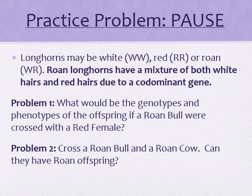Texas Longhorns — a really big cow with really long horns — can be white, represented by WW, red, represented by RR, or roan, which is white with some splotches of red. Roan longhorns have a mixture of both white and red hairs due to a codominant gene. So let's check out the problems. What would be the genotypes and phenotypes of the offspring if a roan bull were crossed with a red female? And question two: cross a roan bull and a roan cow — can they have roan offspring?